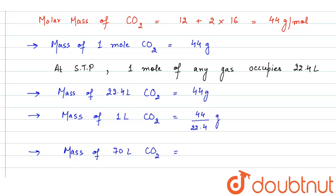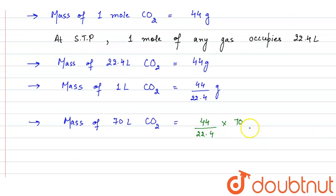And similarly, mass of 70 liter carbon dioxide will be equal to 44 by 22.4 times 70, that will be equal to 137.5 grams. So this is basically the answer. Mass of 70 liter carbon dioxide is 137.5 grams.